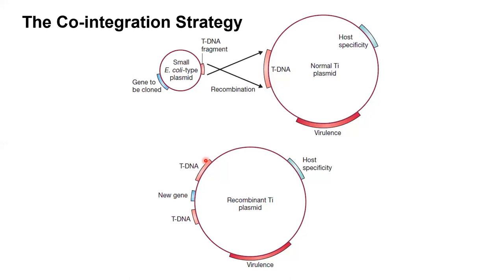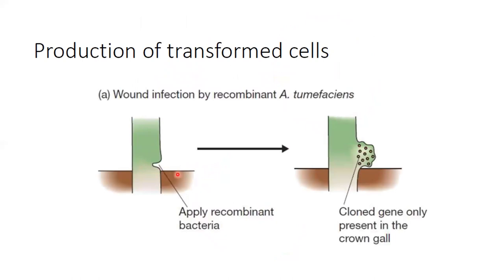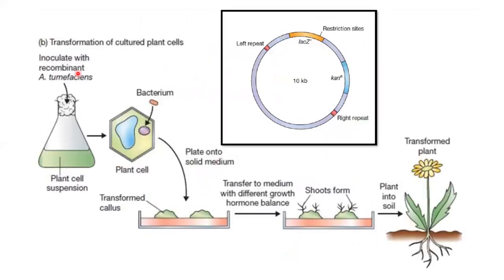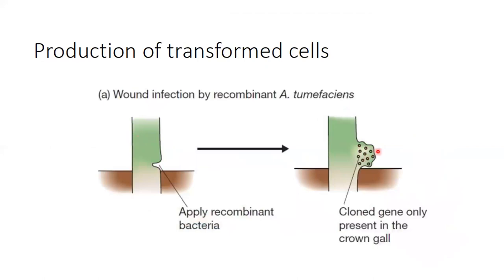This is how we make transgenic plants through Ti plasmids or modified Ti plasmids. We apply the Agrobacterium bacteria to plant wounds, clone the gene in the crown gall. But this is discussed in the plant biotechnology chapter because after having a plant cell suspension, the bacterium is incubated with it. You eventually have a transformed cell — but this is just a single plant cell or a small crown gall, not a whole plant.